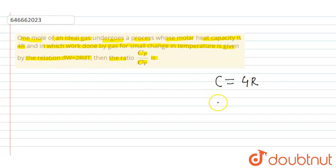And dW that is small work done is equal to 2R dt. Now according to first law of thermodynamics, dQ is equal to du plus dw.